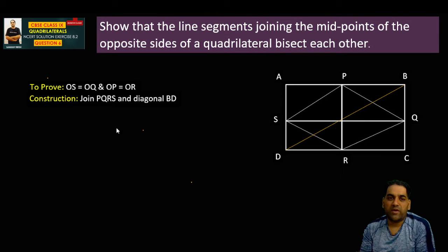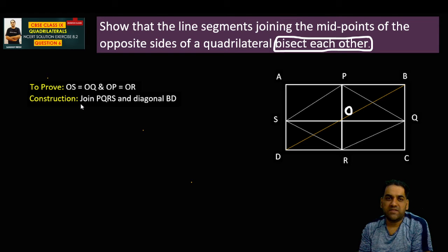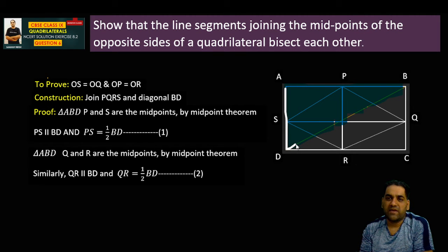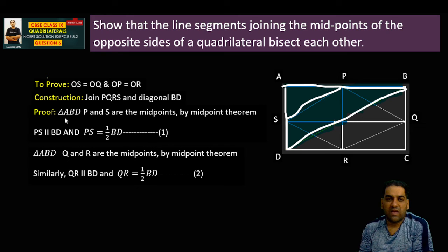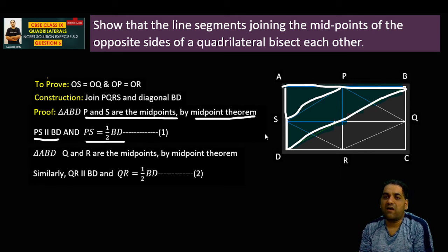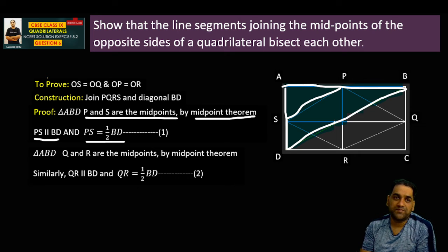So as you can see, we have to prove this property. Now consider triangle ADB. P and S are the midpoints. So by midpoint theorem, PS is parallel to BD and PS equals half BD. This is equation 1, and this equation is clear now.